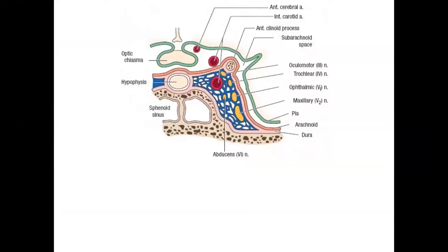You're probably used to seeing the cavernous sinus as this really boring 2D image. But a very easy way to remember it is Odom the cat: ocular motor, trochlear, ophthalmic, maxillary, carotid,